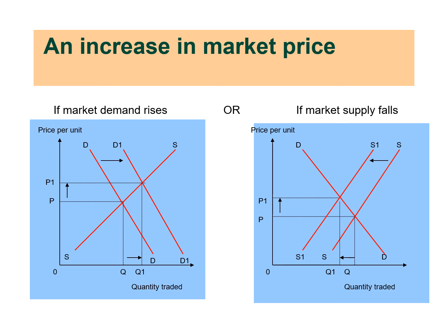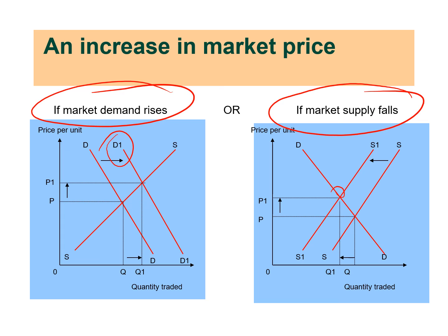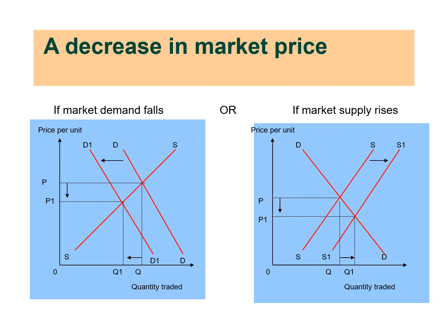As a summary: if market demand rises — a shift to the right — and if market supply falls, in both cases prices will rise. Do not memorize this; always graph it and show what happened to price graphically. For a decrease in market price, it occurs when demand falls or supply rises. In both scenarios, prices decrease.